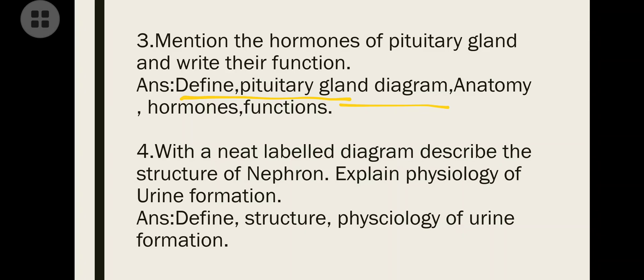Mainly concentrate on anterior pituitary - posterior only has two hormones, oxytocin and vasopressin which you can easily remember. But anterior pituitary gland has very important hormones like growth hormone, growth hormone stimulating hormone, gonadotropin stimulating hormone - many hormones you have to remember with their functions. Next question: With a neat labeled diagram, describe the structure of nephron and physiology of urine formation. Define it, draw the structure - this is very mandatory. In Human Anatomy and Physiology, structures are very important.